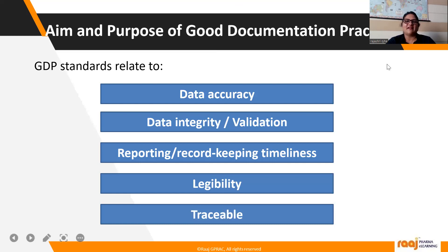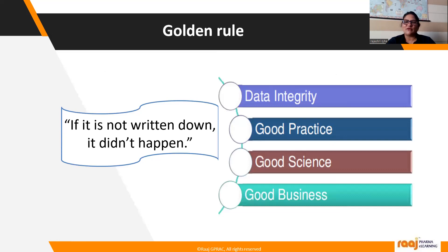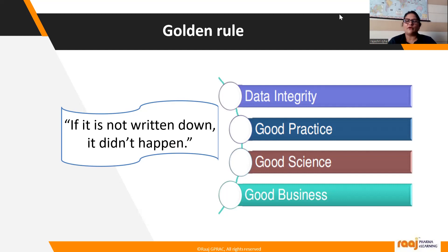GDP aims to ensure globally accepted standards in record keeping and reporting, describing best practices on how to record data, information, observations, and events, and how to create, maintain, and archive documents — considered part of current manufacturing practices (GMP). GDP standards relate to data accuracy, data integrity, validation, reporting, record keeping, timelines, legibility, and testing. The golden rule is: if it is not written down, it did not happen. Good data integrity, good science, and good business together yield good outcomes.